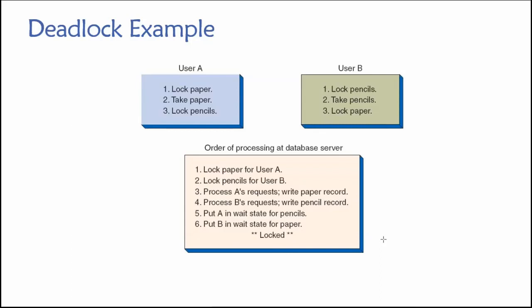All modern enterprise-level database management systems need to have mechanisms in place to detect a deadlock situation — hopefully detect it in advance so that they may be able to alter the order of processing, thus ensuring that the deadlock won't occur in the first place. But this is just a consequence of introducing resource locking as a mechanism for protecting the quality and integrity of data in a multi-user database environment.